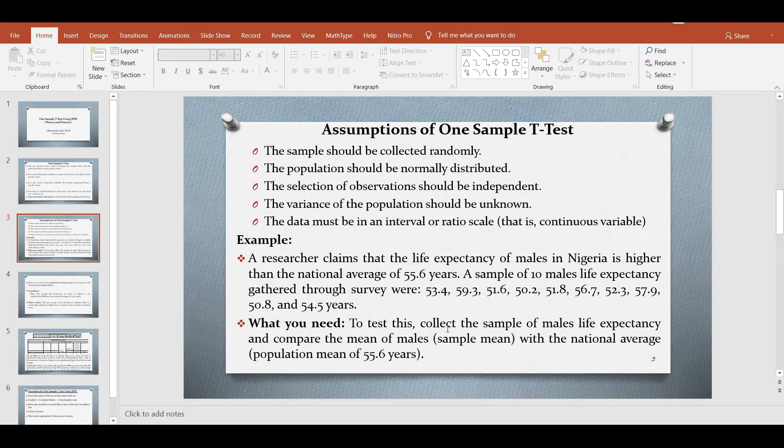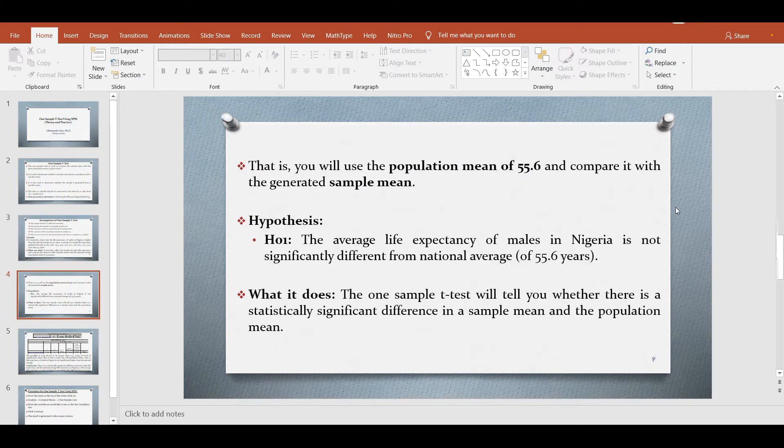What do we actually need? To test this, collect the sample of males life expectancy and compare the mean of males, that is the sample mean, with the national average population mean of 55.6 years. That is, you will use the population mean of 55.6 years and compare it to the generated mean.